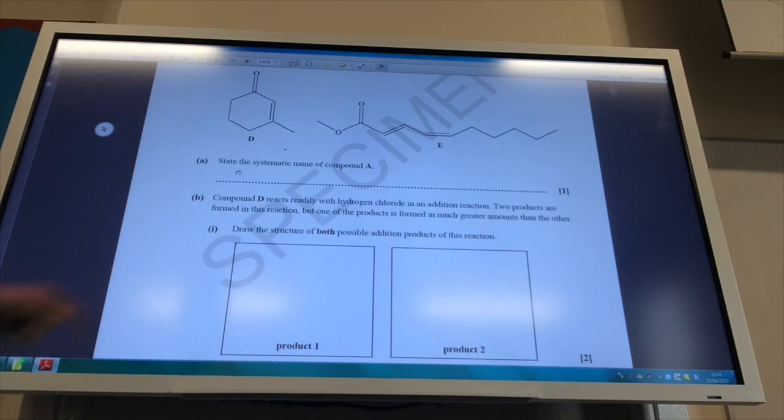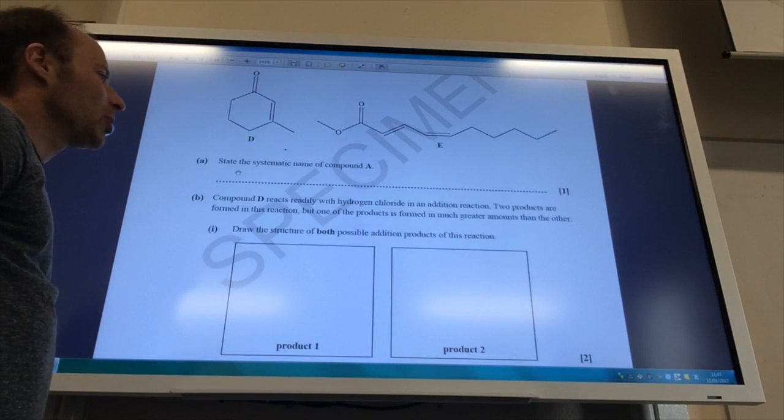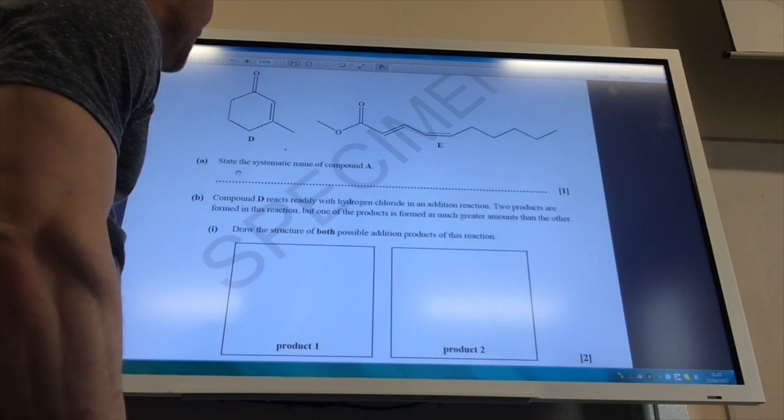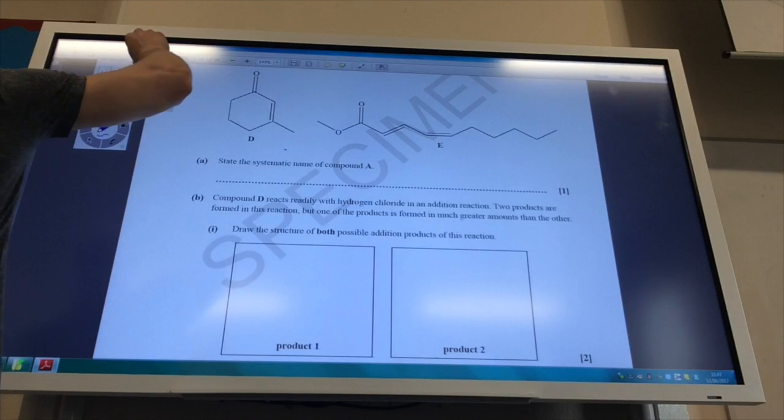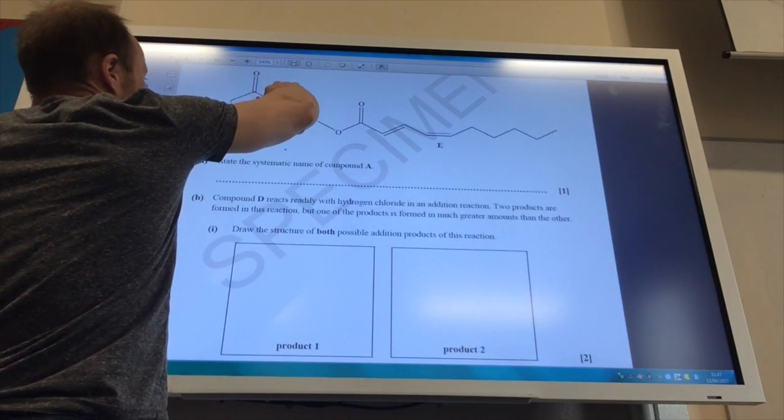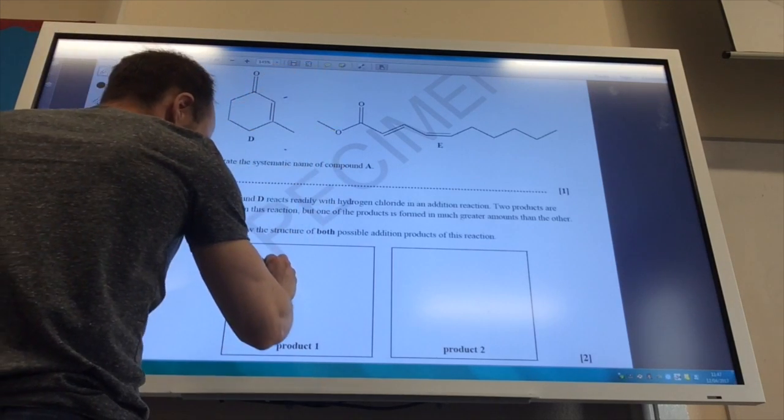Now it tells me compound D reacts with hydrogen chloride in an addition reaction, producing two products. One product is formed in much greater amounts than the others. Draw the structure of both possible addition products. Okay, so you've got your double bond here, so you can add H there, Cl there, or Cl there and H there.